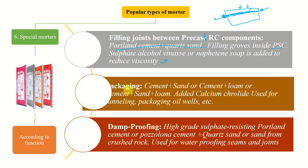Another special mortar application is packing mortar — cement plus sand with calcium chloride as an additive for making it ready for packaging. Tunneling lining: the entire tunnel should be plastered, and it should be water resistant. Dam proofing requires high grades using sulfate-resisting Portland cement, pozzolanic cement, and quartz from crushed rock — used for waterproofing seams and joints in cement water pipes joined underground.